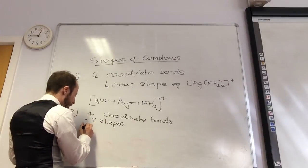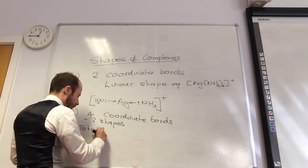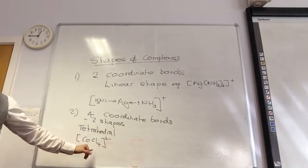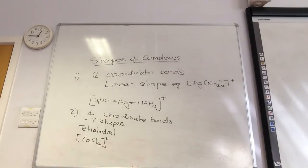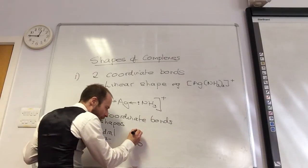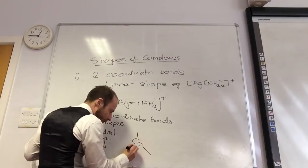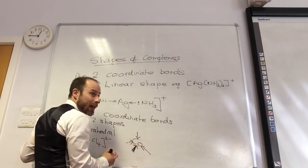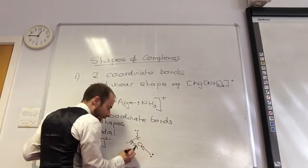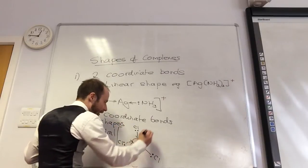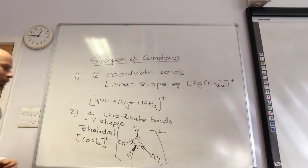The first shape it can go is tetrahedral. An example of that would be cobalt with four chloride ions attached: [CoCl₄]²⁻. I put my cobalt in the middle. The easiest way of drawing these is to draw your bonds as you're used to, then put arrows on the heads, then put lone pairs so that you remember to do that, and then put your ligands. Then the whole thing in square brackets with a two minus charge.